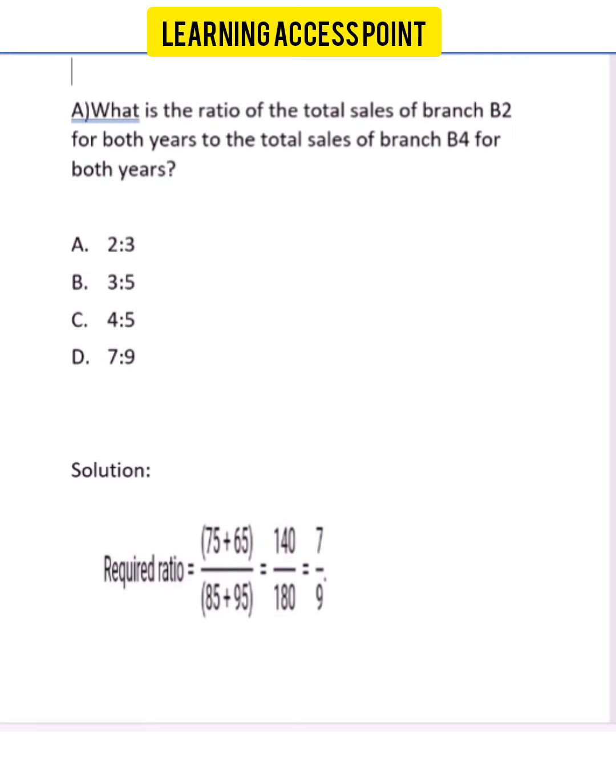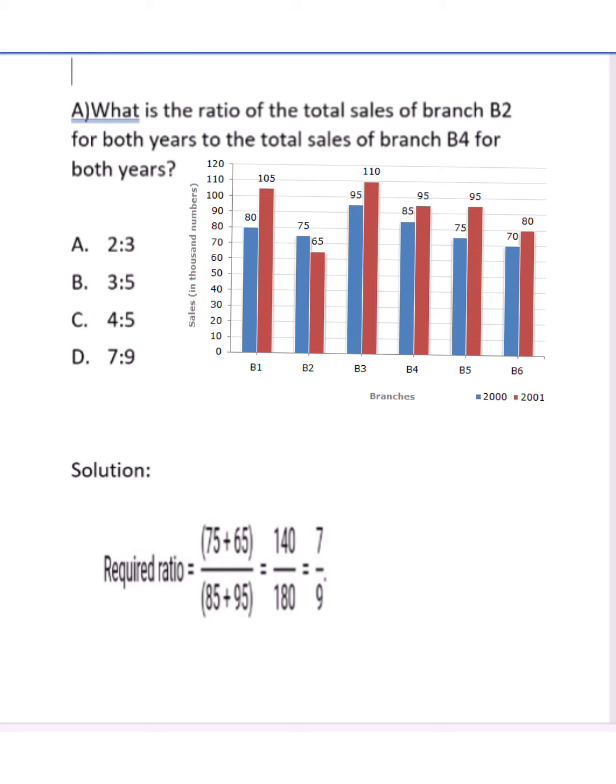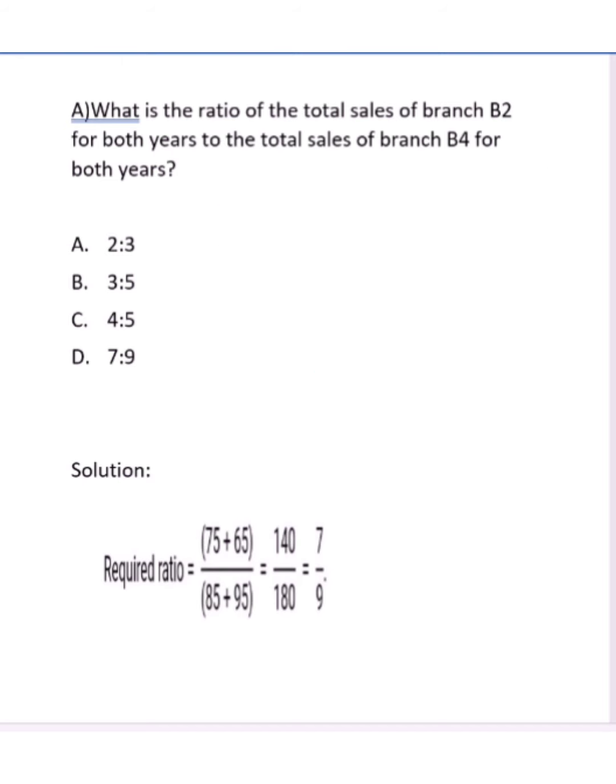What is the ratio of the total sales of branch B2 for both years to the total sales of branch B4 for both years? For this, we have to take the data first. For B2, both years means 75 plus 65. Now we take B4, which is given as 85 and 95. We have taken all the data. Then we solve the equation and get the value as 7 is to 9. So the correct option is option D. Now we move to the second question.